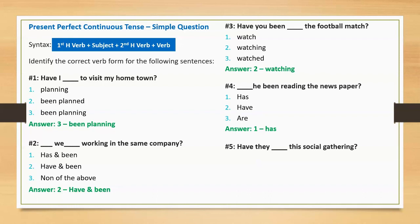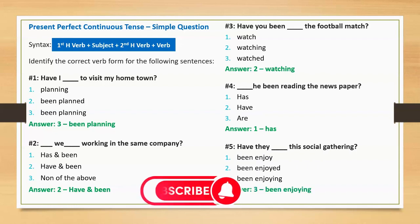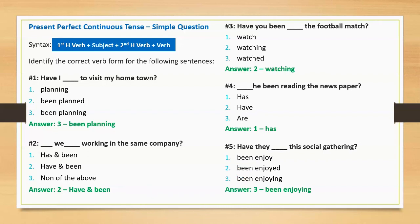Question five: 'Have they blank this social gathering?' Options: been enjoy, been enjoyed, and been enjoying. Correct option: been enjoying. Full sentence: 'Have they been enjoying this social gathering?'